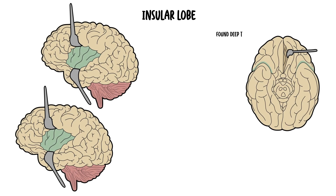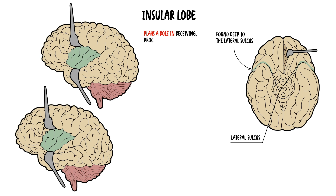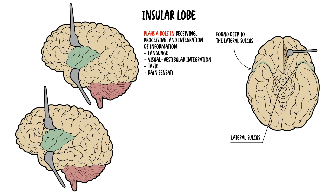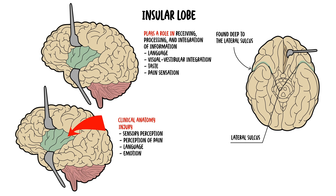The insular lobe is found deep to the lateral sulcus. This lobe plays a role in the receiving, processing, and integration of many types of information, such as language, visual, vestibular integration, taste, and pain sensation. Injury to the insular lobe can result in difficulties with sensory perception, such as touch, taste, sound, smell, perception of pain, language, and emotion — in particular, the emotions of disgust and anger. Interestingly, chronic pain can alter the function and anatomical structure of the insular lobe, resulting in thinking disruption and changes in emotional state.